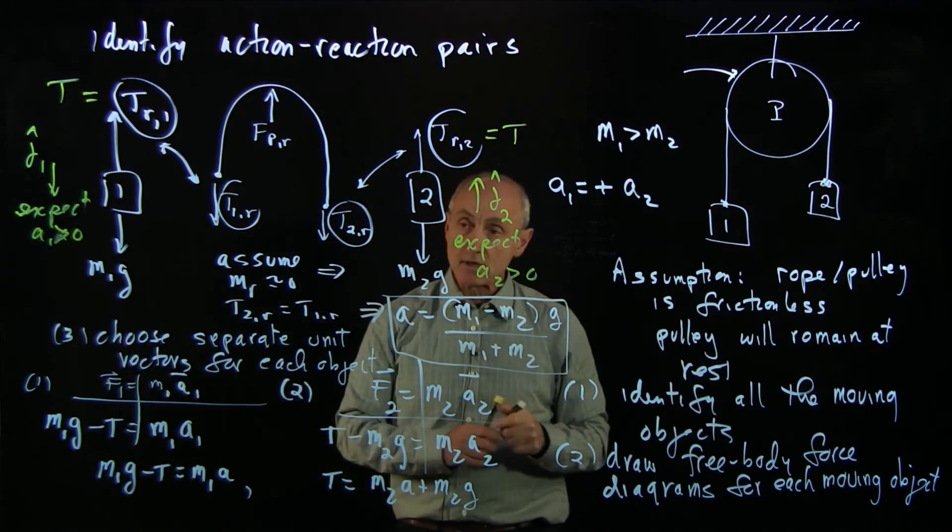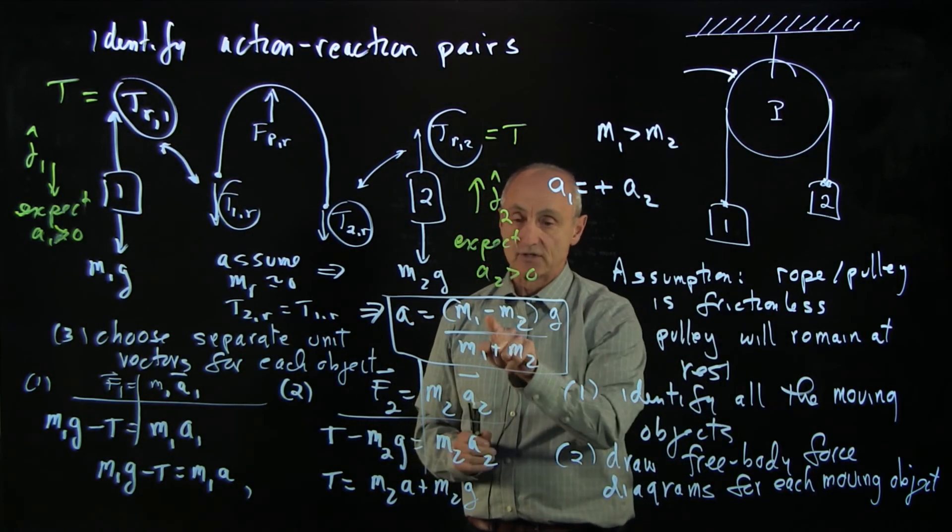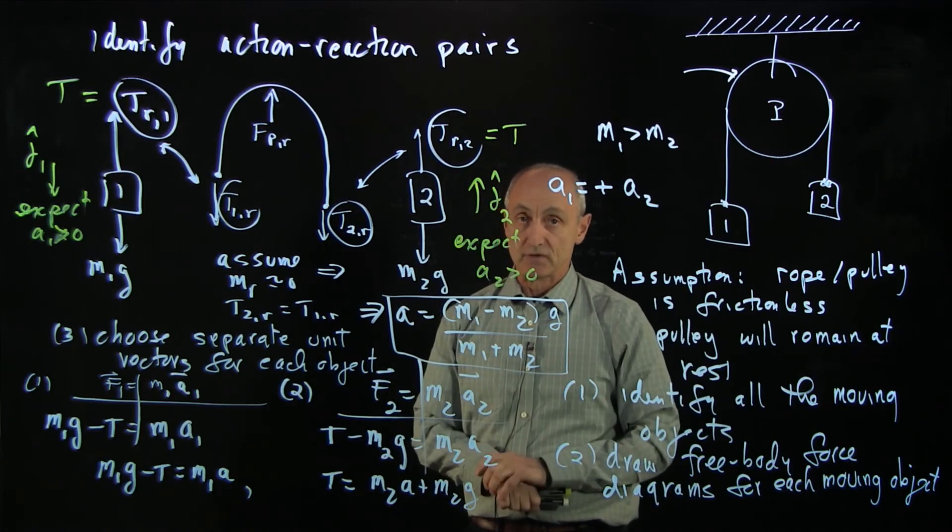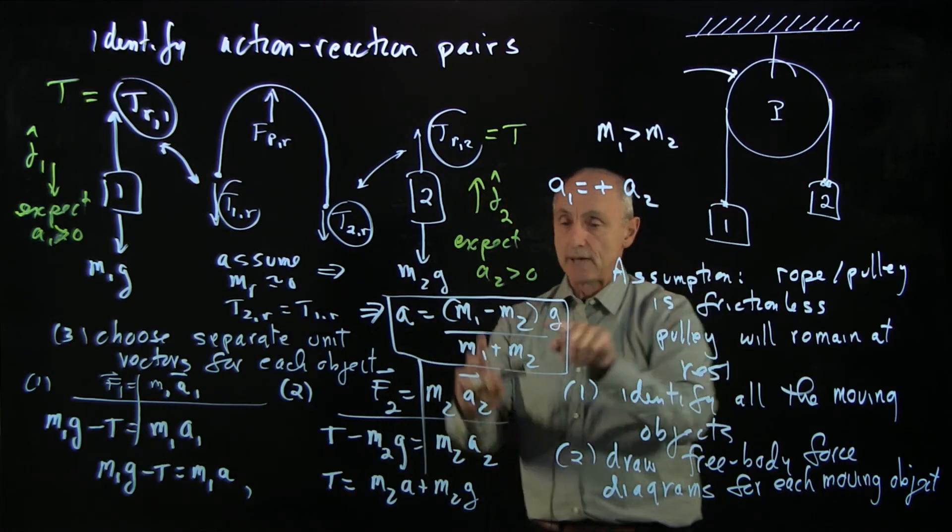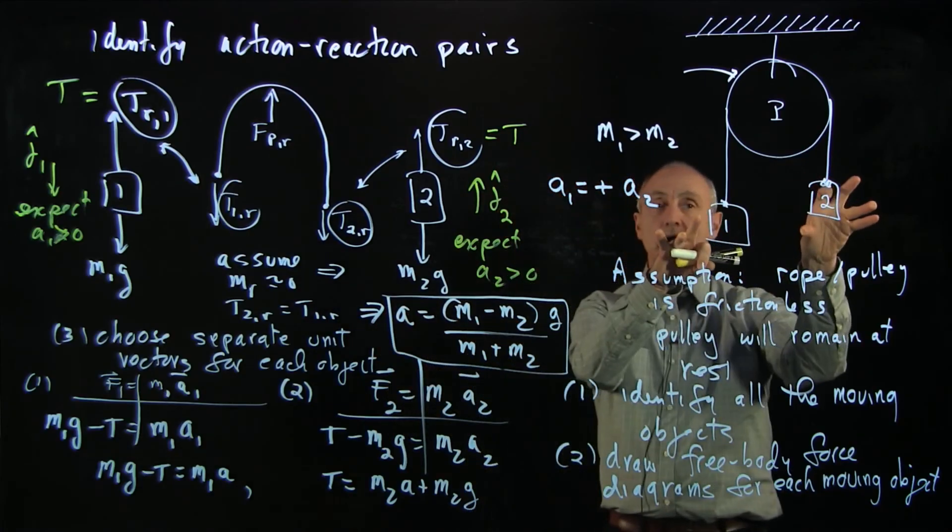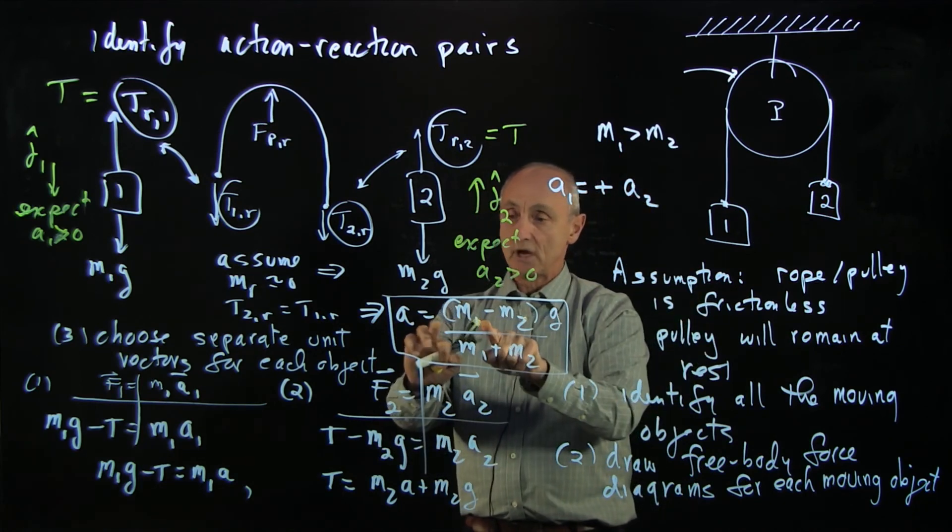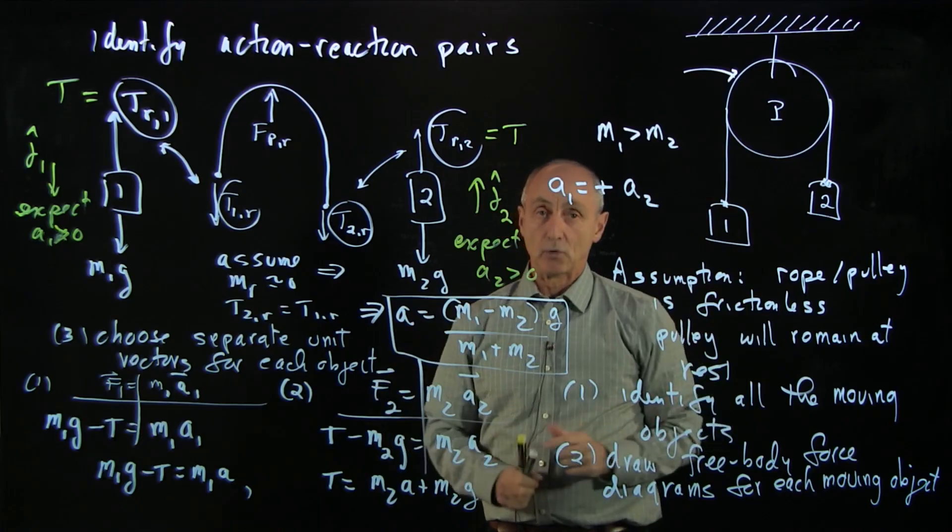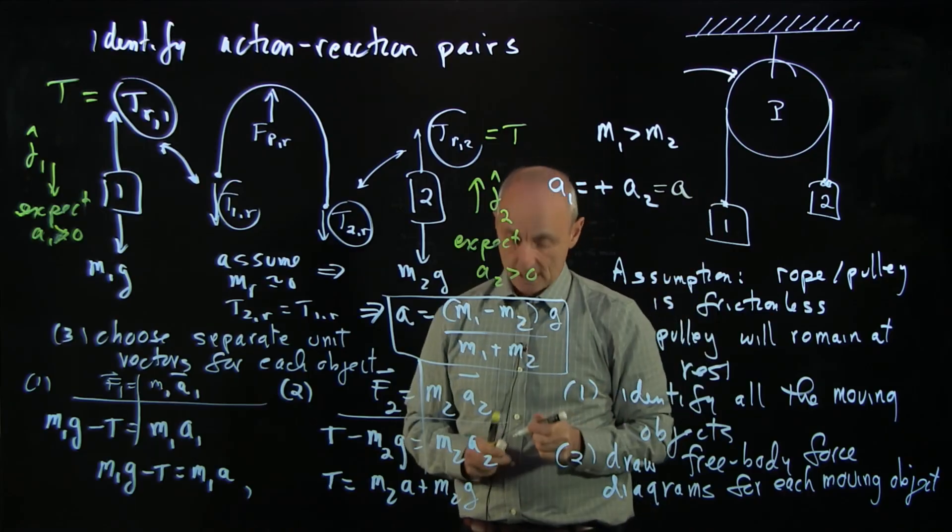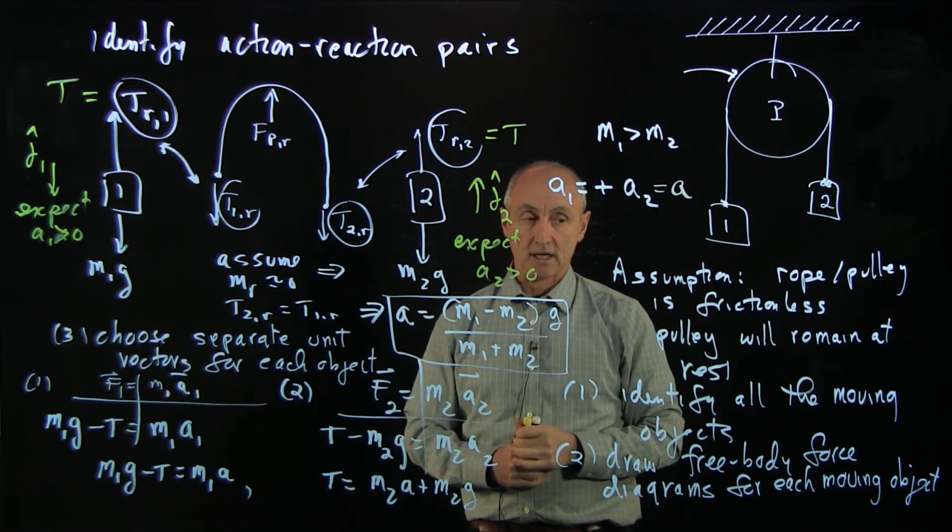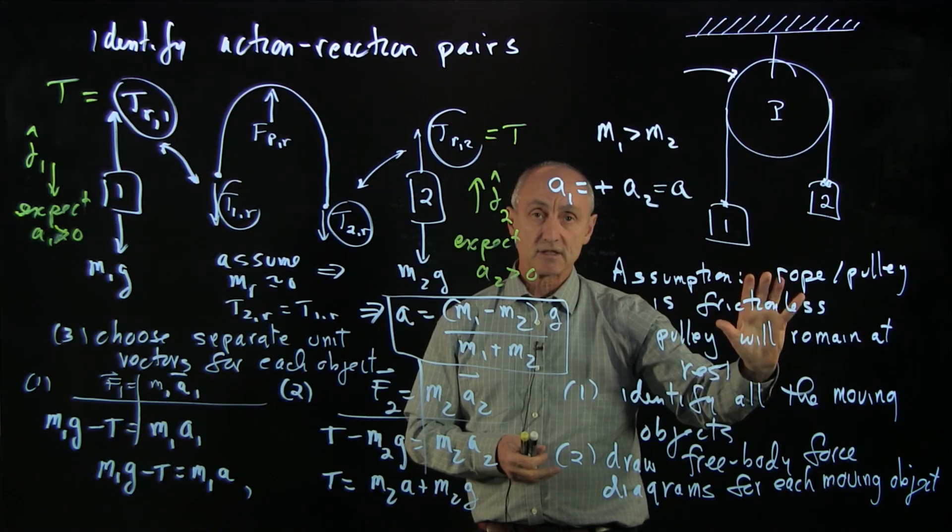We're almost done. We need to check our answers. First off, does it have the dimensions of acceleration? Answer, yes. Mass divided by mass, g has the dimensions of acceleration. That's my first check always with my algebra. Second check, what if m1 is equal to m2? Then the acceleration is 0. I expect them to be balanced. I've said that m1 is greater than m2, positive sign. My a is positive. That's how I set up my coordinate system. So I expect that. By the way, our symbol a was equal to those, and so I'm pretty confident that my result is correct.